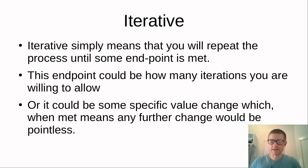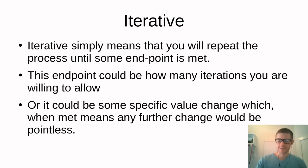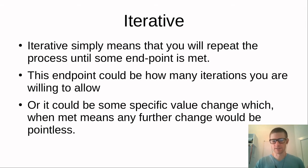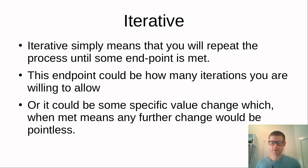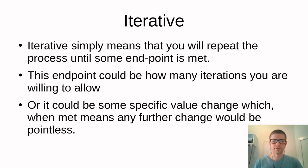The iterative part means the process is repeated until some endpoint is met. That could be a fixed number of iterations — ten, fifty, a hundred — or a threshold value. The threshold approach says: keep repeating until the change from one iteration to the next is so small it's negligible. Ideally you use a threshold rather than a fixed count, since the appropriate number of iterations varies depending on the data.